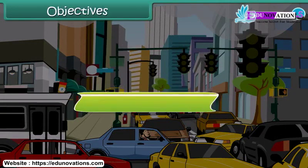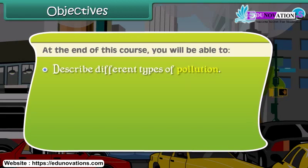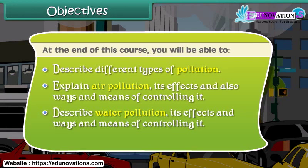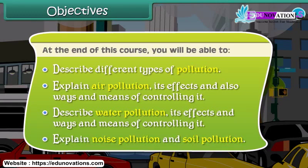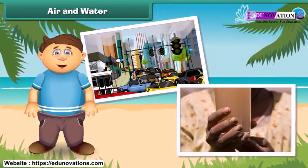Objectives: At the end of this course, you will be able to describe different types of pollution, explain air pollution, its effects, and also ways and means of controlling it, describe water pollution, its effects and ways and means of controlling it, and explain noise pollution and soil pollution.